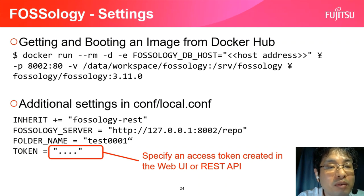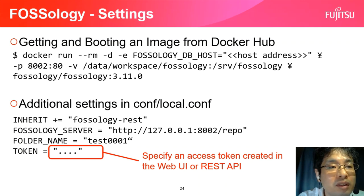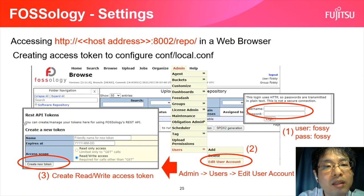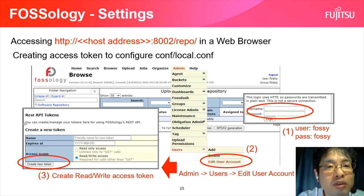Next, Fossology is available on Docker Hub, so start it with the docker run command. The MetaSPDX Scanner setting is shown on this slide. The token is the key used to refer to Fossology from MetaSPDX Scanner. The token is created in Fossology. Fossology is accessible through port 8002 on the host. Log in with Fossology as the user and password. You can create an access token from the user account settings in the admin menu.